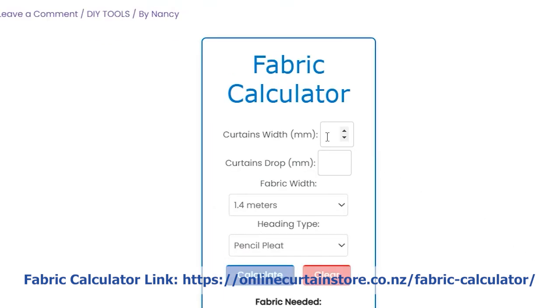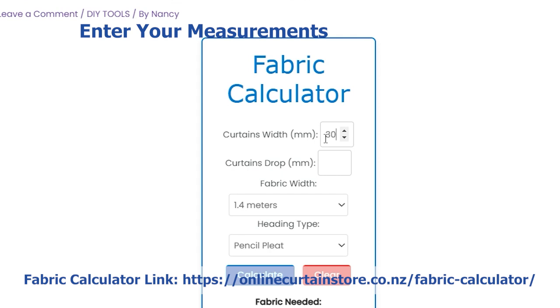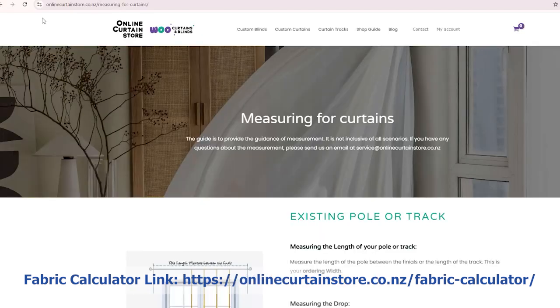Step 1: Enter your measurements. First, enter your desired curtain width and drop or height in millimeters. Need help measuring? Check out our Measuring for Curtains guide on our website.